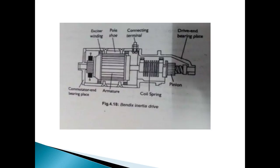Now let's look at the Bendix inertia drive figure. The components include: the commutator and bearing, the exciter winding, the pole shoe arm, the motor, the connecting terminals, the coil spring, the pinion, the drive end bearing, the threaded sleeve, and the drive mechanism at the front.